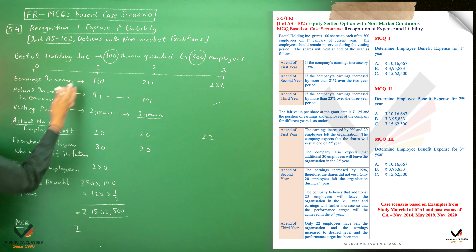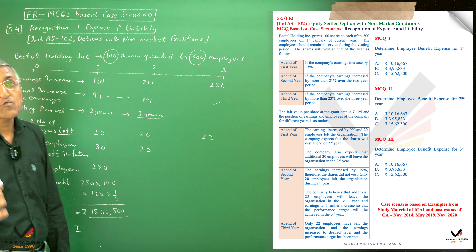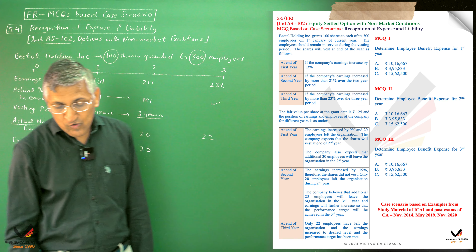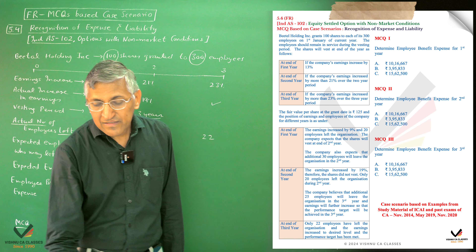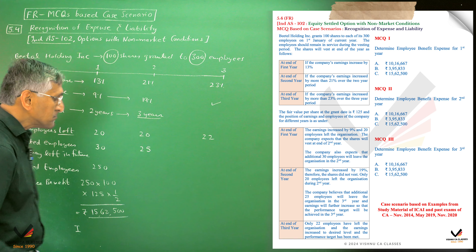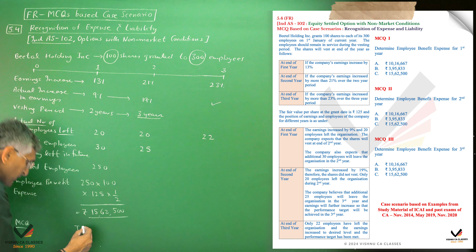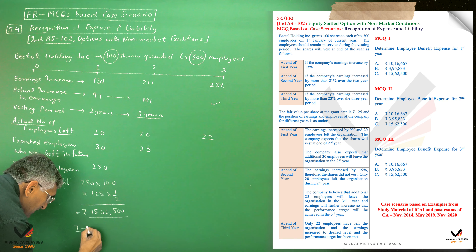MCQ 1 asks: how much is the employee benefit expense for Year 1? The correct answer is option C, which is 1,562,500.